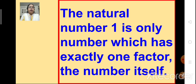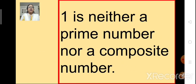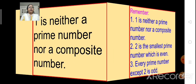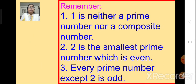And what about 1? 1 is a natural number which is divisible only by itself. It has only one factor, that is the number itself. 1 is considered neither a prime number nor a composite number. Now let's remember these points: 1 is neither a prime number nor a composite number. 2 is the smallest prime number, and it is even. Every prime number except 2 is odd.